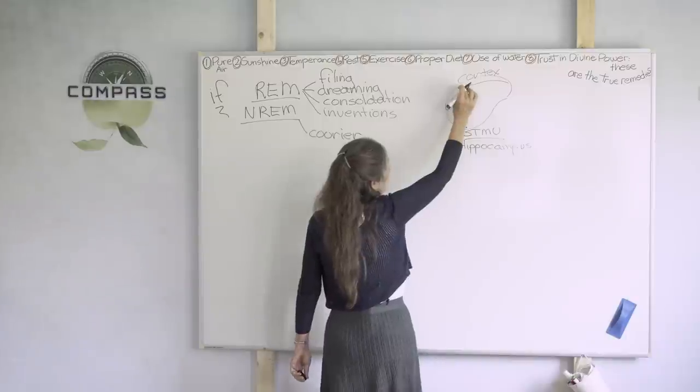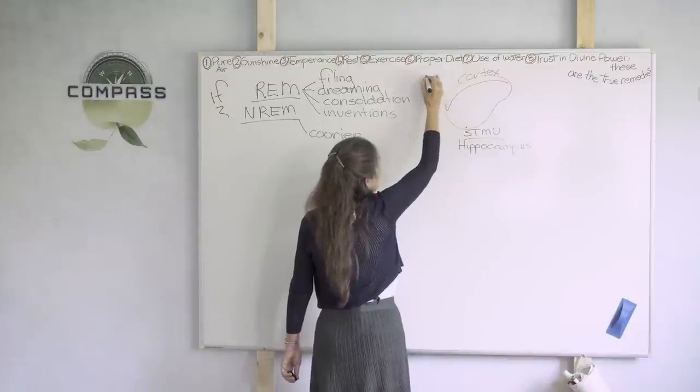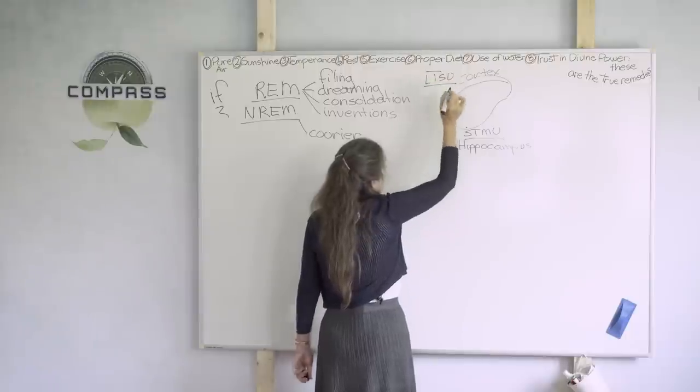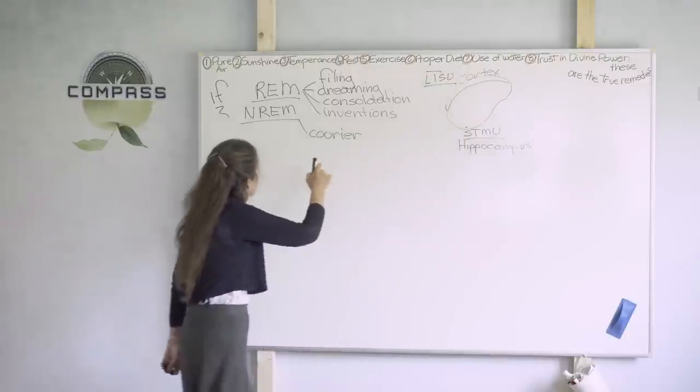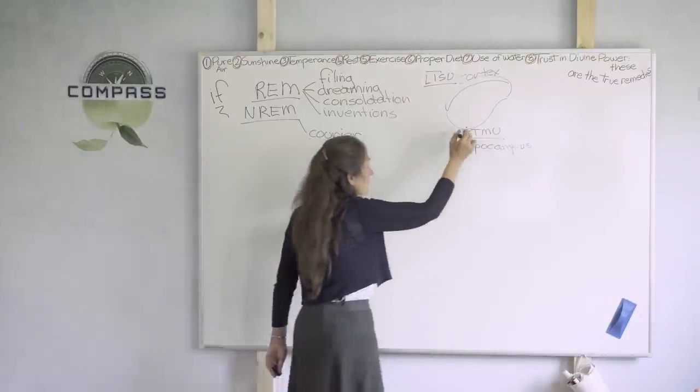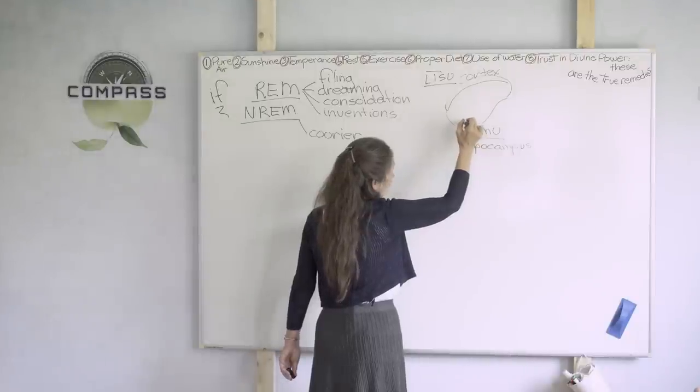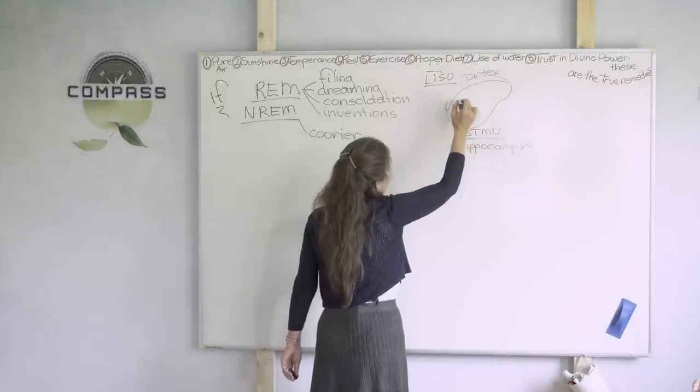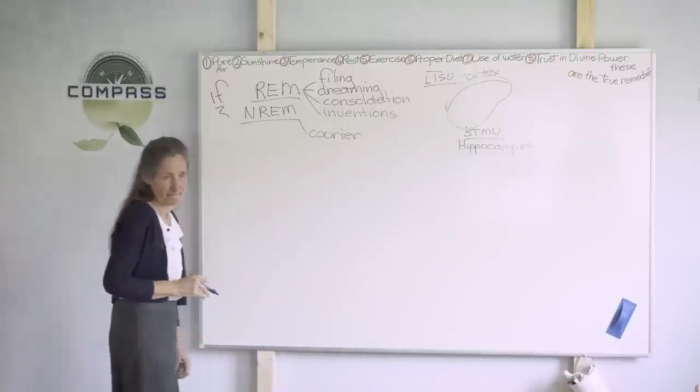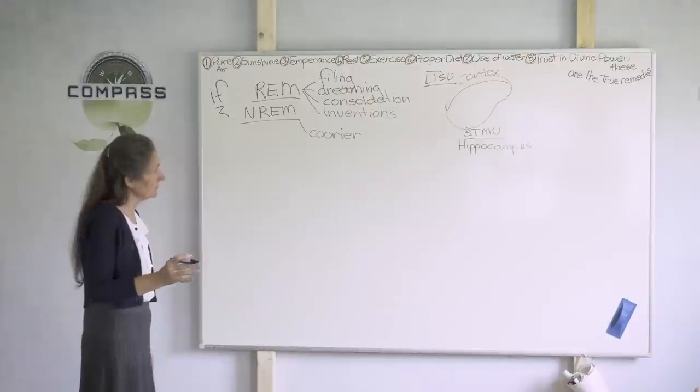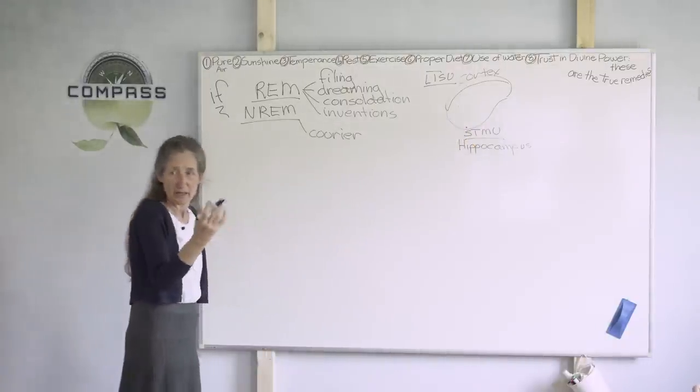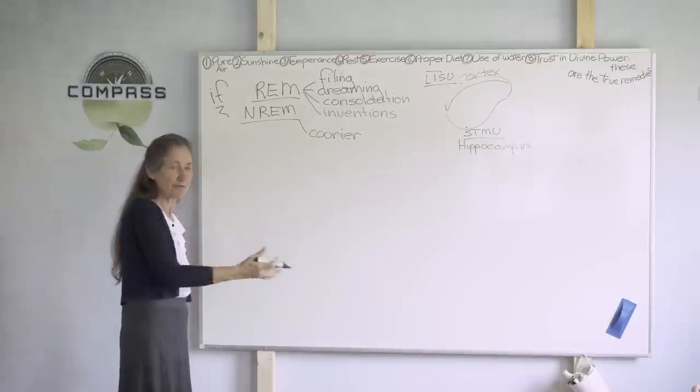Now, up the top, right in the middle of the cortex, there's the long-term storage unit. And so in non-rapid eye movement time, there's a courier system that is taking the memory from the short-term memory unit up to the long-term storage unit. And this is very important that this be emptied through the night so that the next day you've got an empty storage unit for the day's memories.